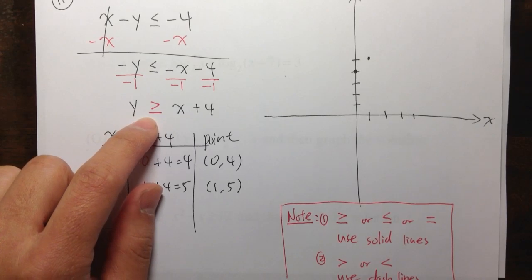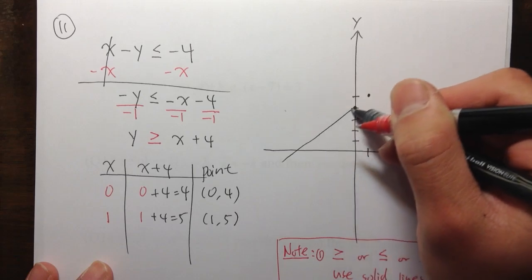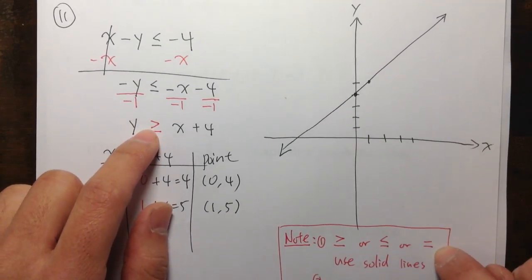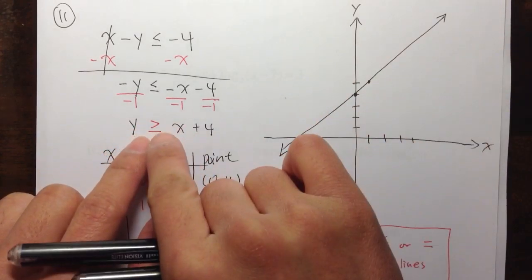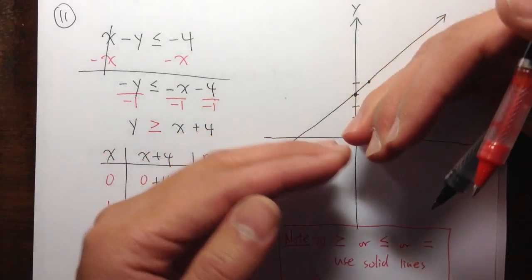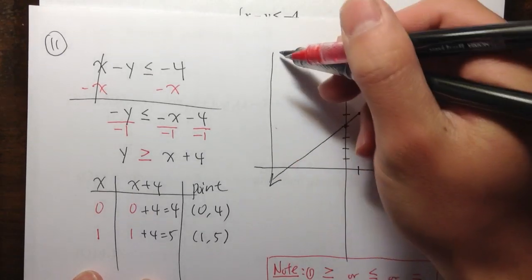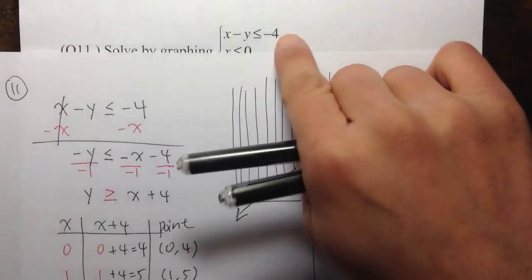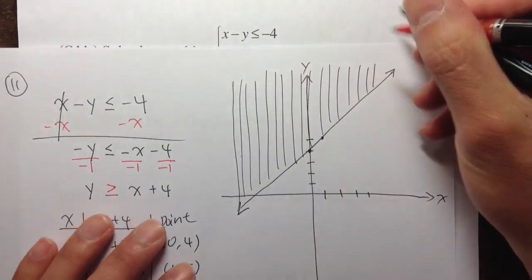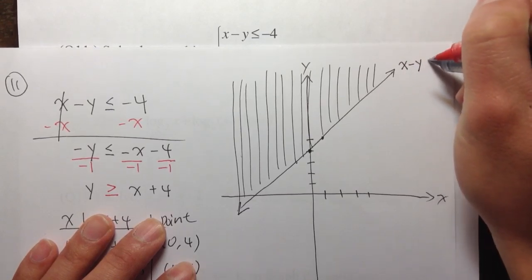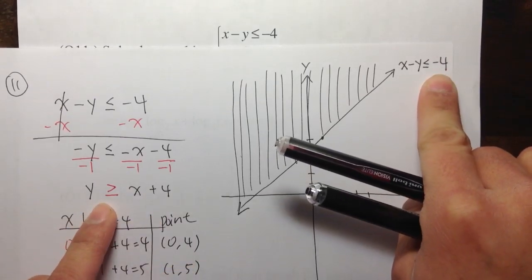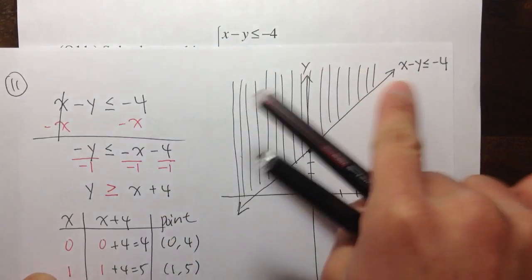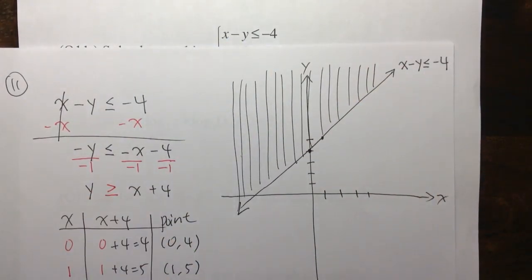Since we have y is greater than or equal to, it's a solid line — let me draw a straight line. If it was just an equal sign, a straight line would be it. But we want y to be everything that's bigger than or equal to this — everything above this line. So let me shade this region in above the line. This part represents the inequality of the first equation, which is x minus y is less than or equal to negative 4.